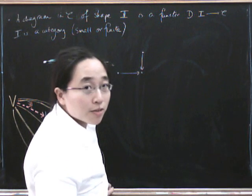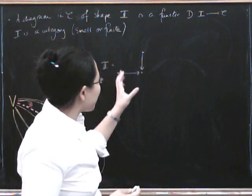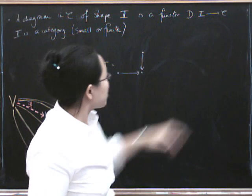And you may remember, I hope, that taking a limit over a diagram of that shape in a category is what's called pullback.